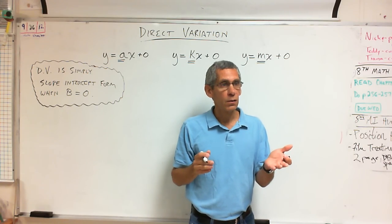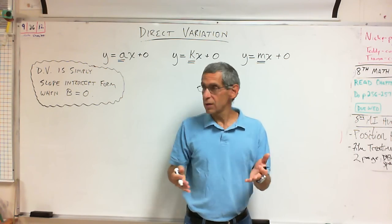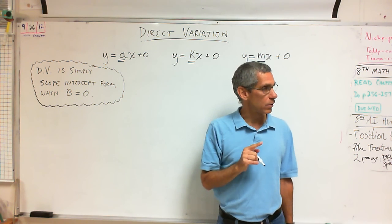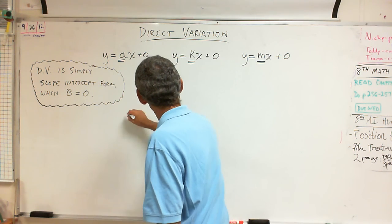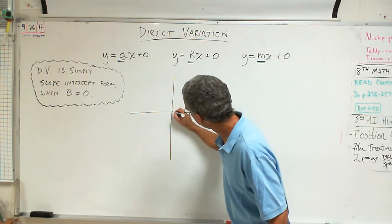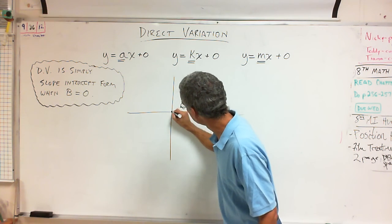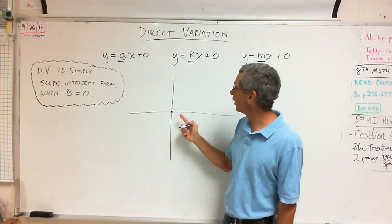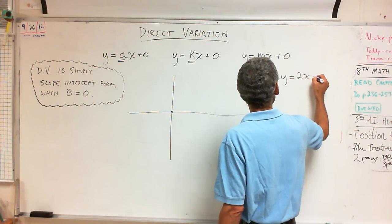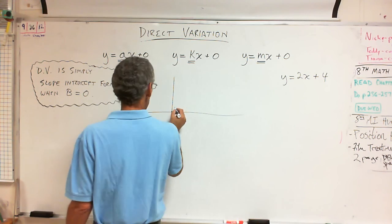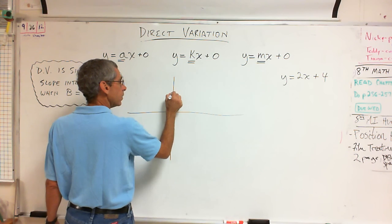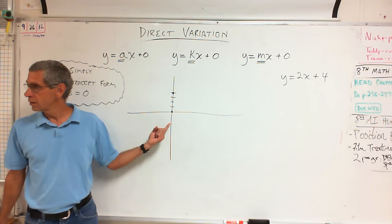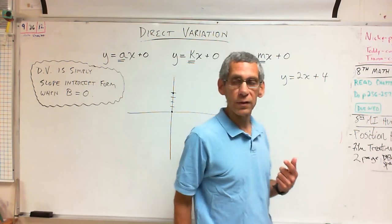Every direct variation problem must have the point zero, zero. One of the points on the line has to be zero comma zero. That means if you have a graph, it has to start at the origin. If it has Y equals 2X plus 4 and I have to go up 4, it doesn't vary directly because it doesn't go through zero, zero.